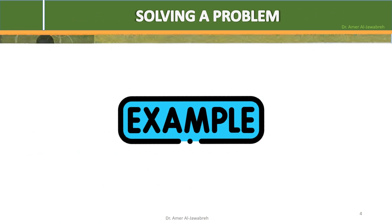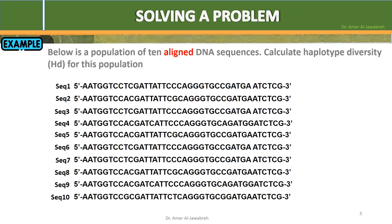Solving a problem — Example. Below is a population of 10 aligned DNA sequences. Calculate haplotype diversity HD for this population.